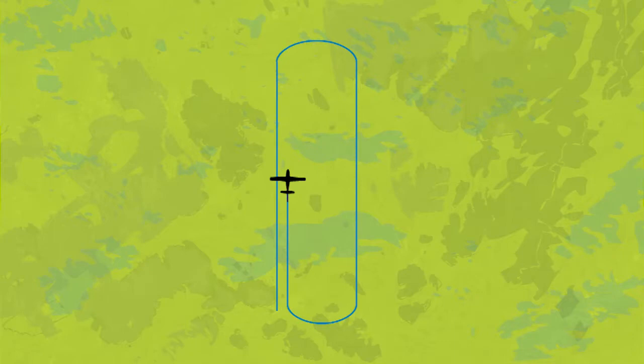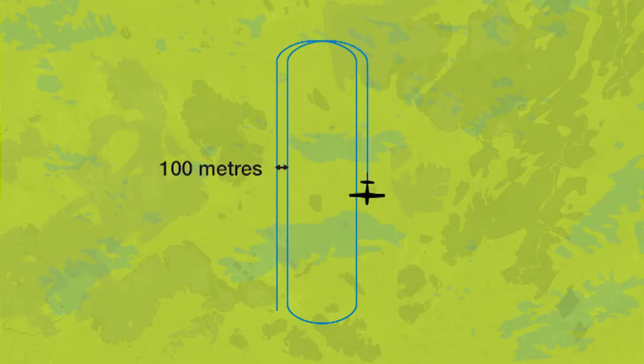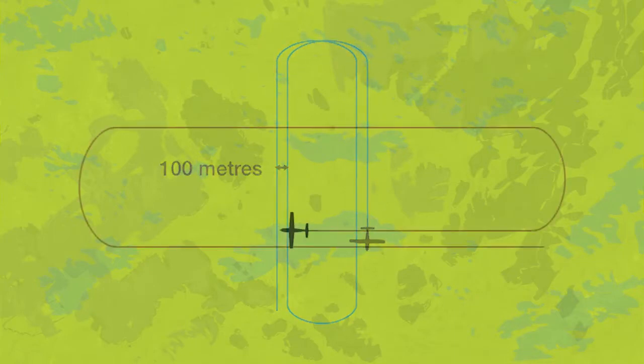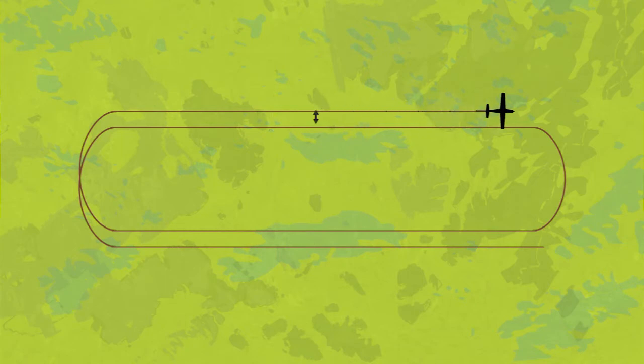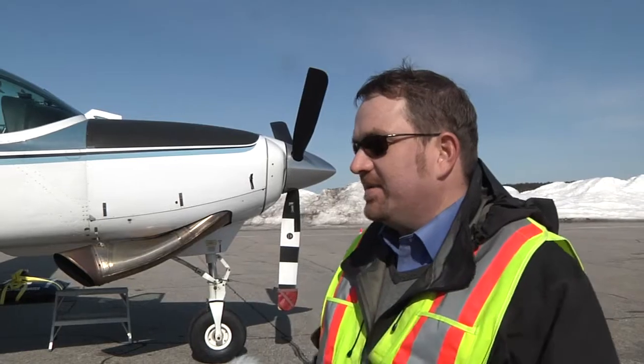We have what we call blocks, and in the blocks there are lines that have 100-metre line spacing. The control lines flying north-south and the control lines flying east-west have 500-metre line spacing.